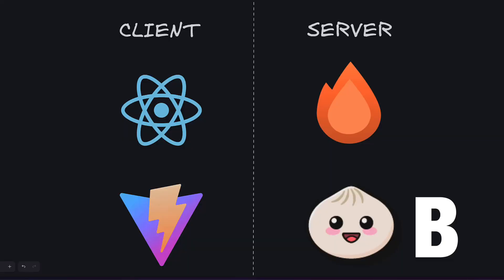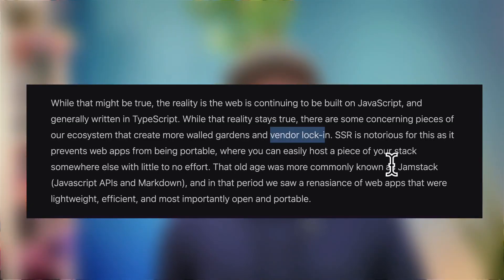Just when I thought we were getting a break from new JavaScript frameworks, a new one emerges called Beaver, or Bhover, which isn't exactly a new framework but more of a mashup of four popular tools with the aim of bringing back vendor-agnostic Jamstack apps — which sounds like a dig at Next.js — so let's try it.